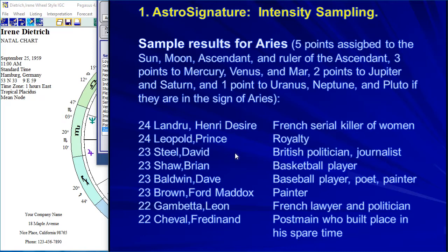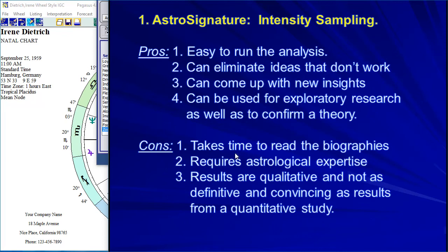The reason this is so powerful is because you are not picking the data — we have the strongest people with Aries and they must fit our theory. This moves astrology into the 21st century information age. Some pros: it's easy to run the analysis, you can eliminate ideas that don't work, you can come up with new insights, and you can use it for both exploratory research and confirming a theory. Once you decide Aries means such and such, look at the next five people in the list — if you can make a good argument, you have very convincing support.